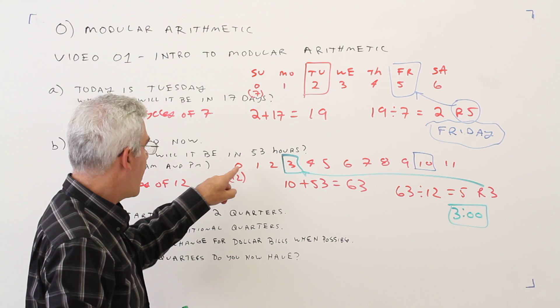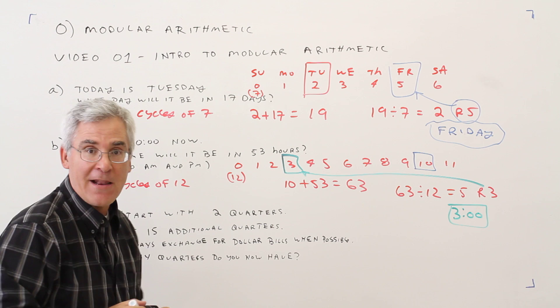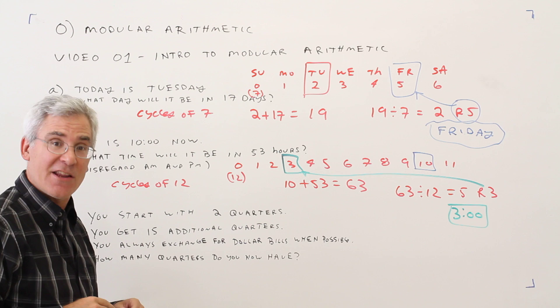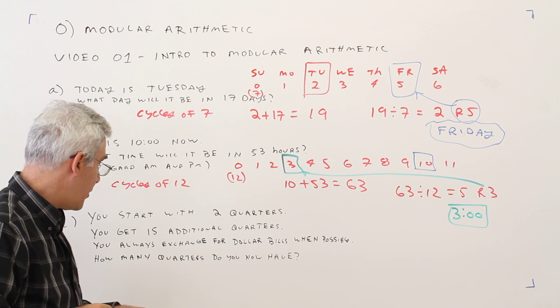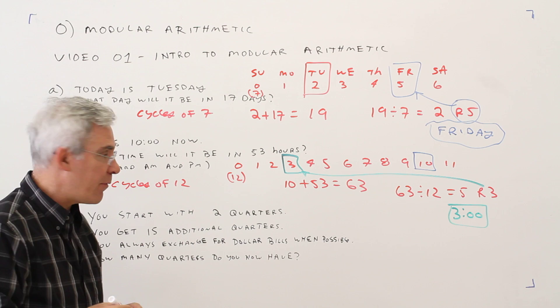Okay, notice this will be a remainder 0. Alright, final problem. You start with 2 quarters. You get 15 additional quarters. You always exchange for dollar bills when possible. How many quarters do you now have?